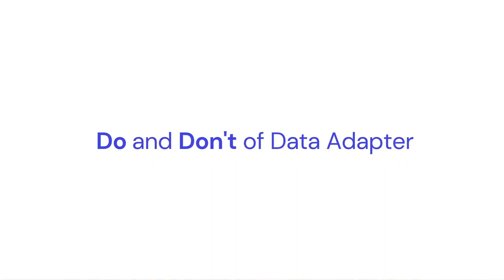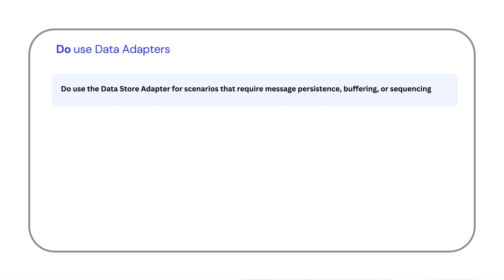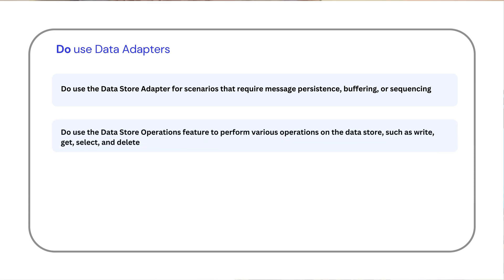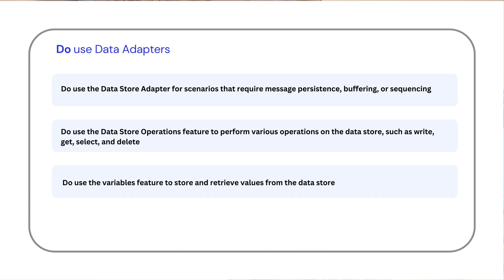Now let's talk about the dos and don'ts of using the data store adapter. Use the data store adapter for scenarios that require message persistence, buffering, or sequencing. Use the adapter for data store operation features to perform various operations on the data store such as write, get, select, and delete. By using this adapter you can also use variable features to store and retrieve values from the data store.